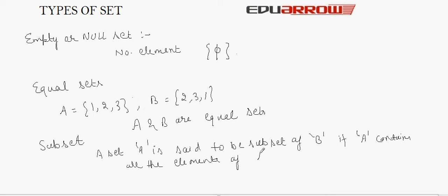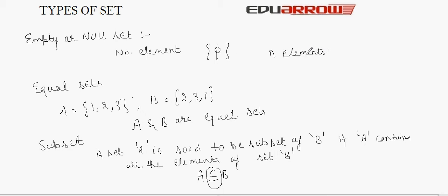A is a subset of B, which is represented by the subset symbol. If a set A has S elements, then the number of subsets of A is 2 to the power S.